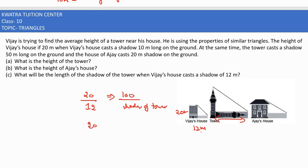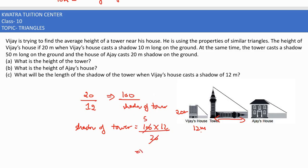Taking the shadow of the tower to the left side, shadow of tower equals 100 into 12 divided by 20. Cancelling 20 and 100 gives 5, and 5 into 12 is 60 meters. So the shadow of the tower would be 60 meters.